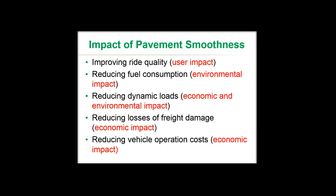The second important construction quality measure is smoothness, which has various consequences impacting pavement sustainability. These consequences include improving ride quality and user convenience, reducing fuel consumption which results in environmental impact, reducing dynamic loads with both economic and environmental impact, reducing losses from freight damage with economic impact, and reducing vehicle operation costs with economic impacts.